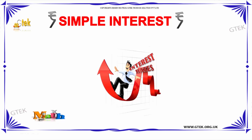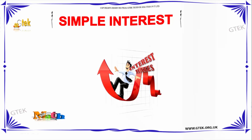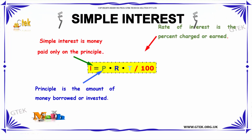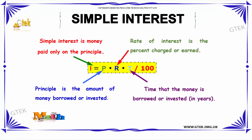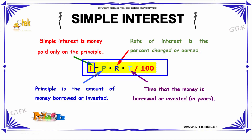Let us discuss simple interest. The simple interest is given by the expression: SI = P × R × T / 100, where I is the simple interest — the money paid only on the principal — P is the principal (the amount of money borrowed or invested), R is the rate of interest (the percentage charged or earned), and T is the time the money is borrowed or invested, in years.